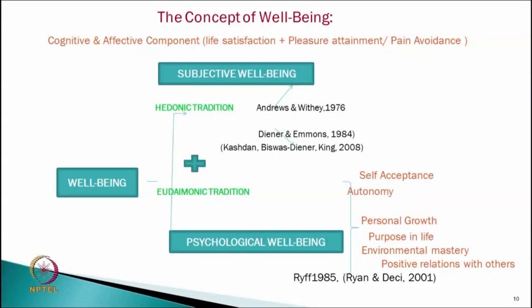Some scholars actually combined the hedonic and eudaimonic models and proposed a flourishing theory or well-being theory. By including these two independent theories, they developed further theories in psychology. They considered in the same theory cognitive and affective components — life satisfaction, pleasure, attainment, pain avoidance — plus self-acceptance, autonomy, personal growth, purpose in life, environmental mastery, and positive relationships with others.